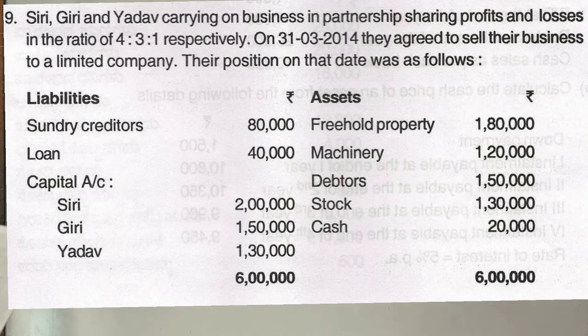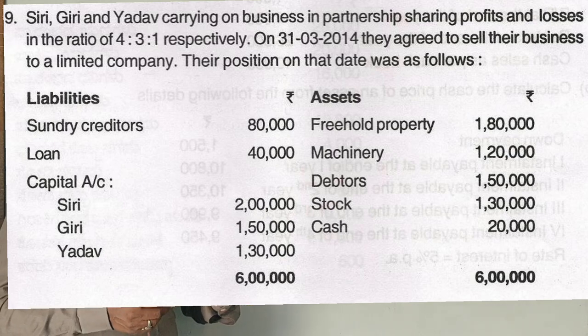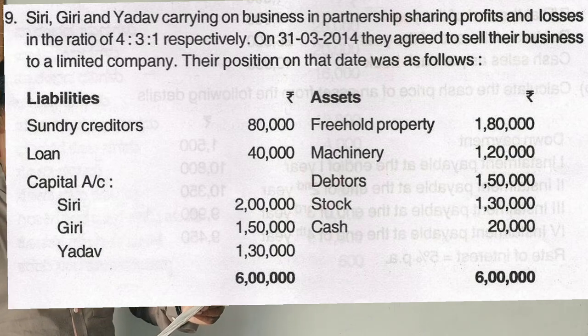Here's a 2014 question on sale of a partnership to a joint stock company. Siri, Giri, and Yadav are carrying on business in partnership, sharing profits and losses in the ratio of 4:3:1. On March 31st, 2014, they agreed to sell the business to a limited company.